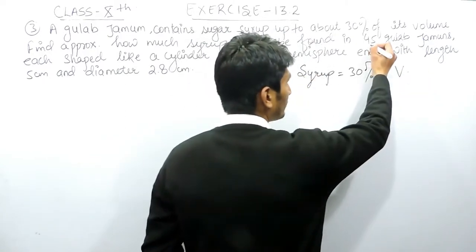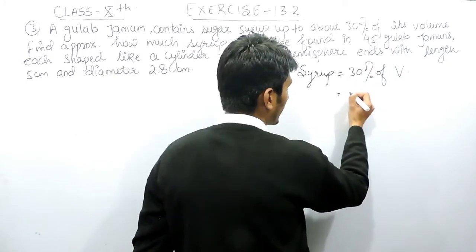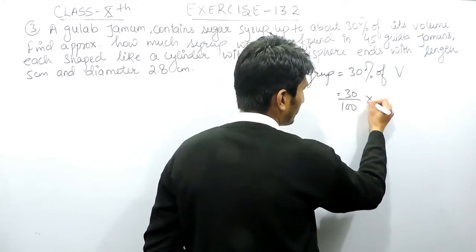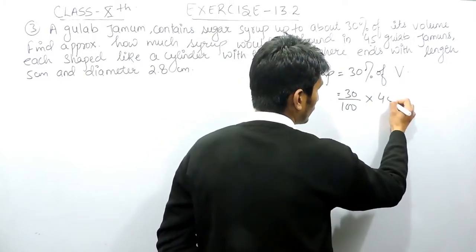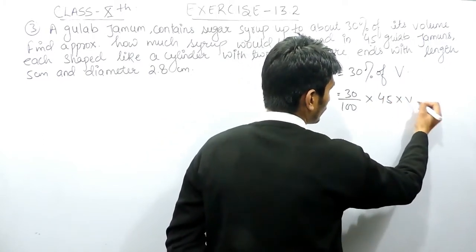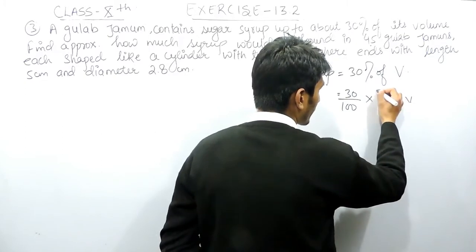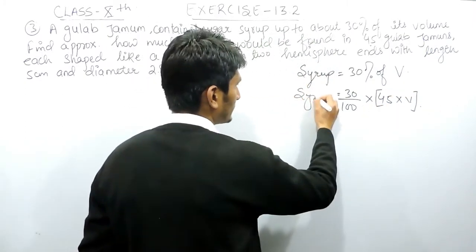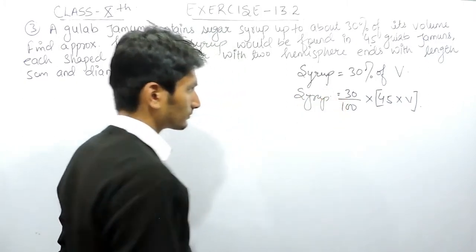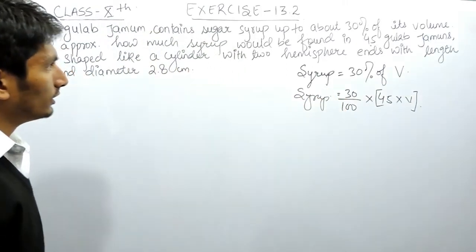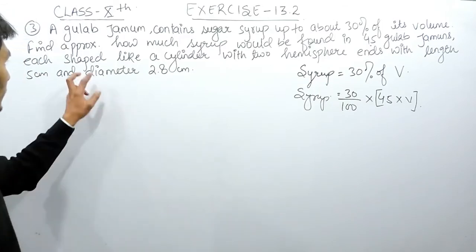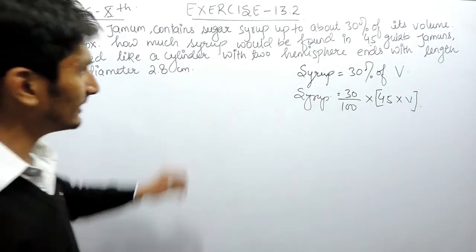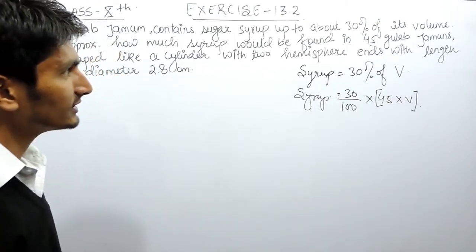So the syrup equals 30% of the volume, which is 30 upon 100 multiplied by 45 multiplied by the volume of each gulab jamun. This will give the amount of syrup. The shape of each gulab jamun is a cylinder with two hemispheres.